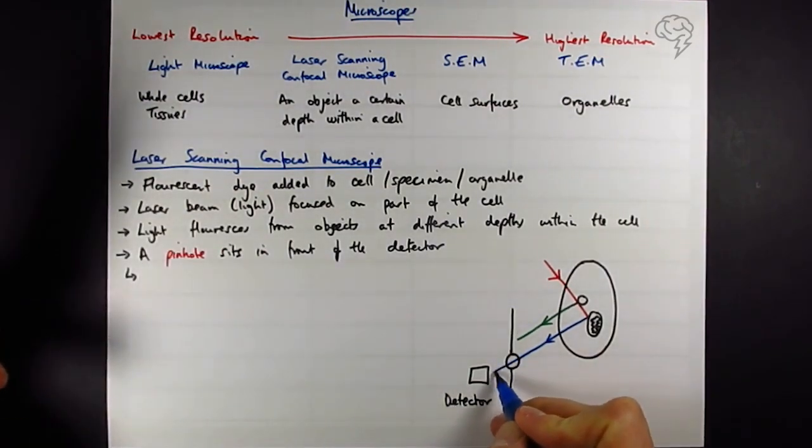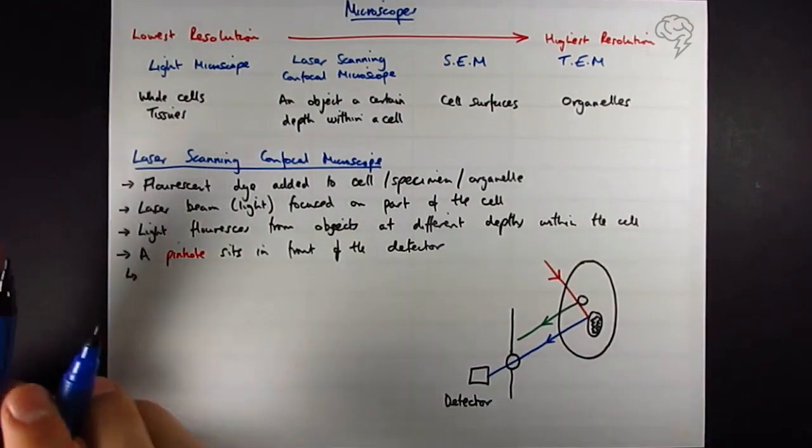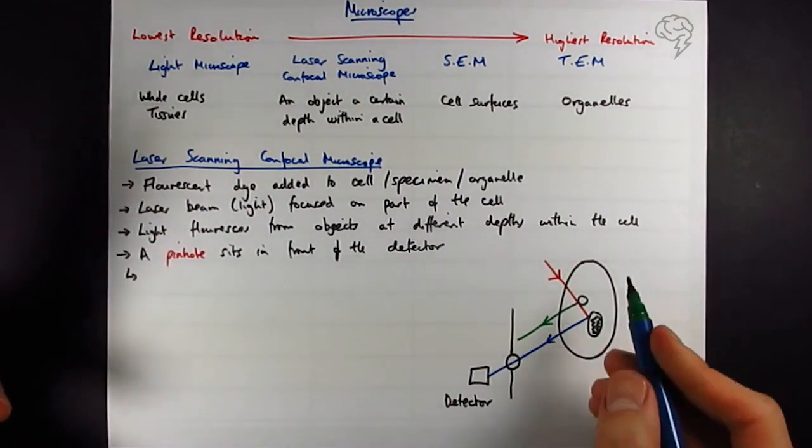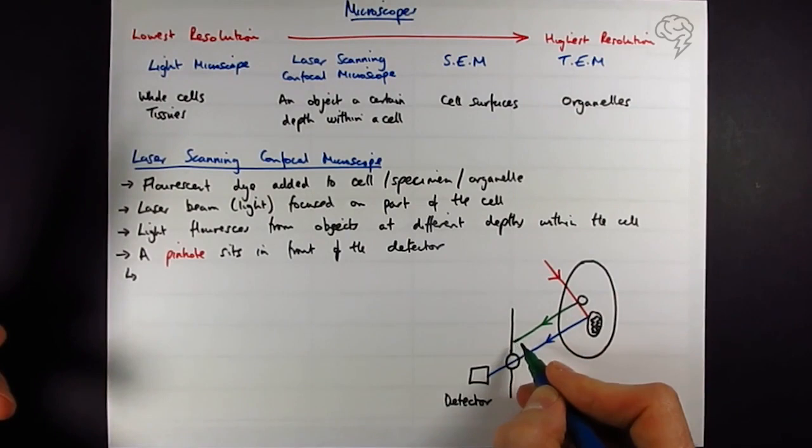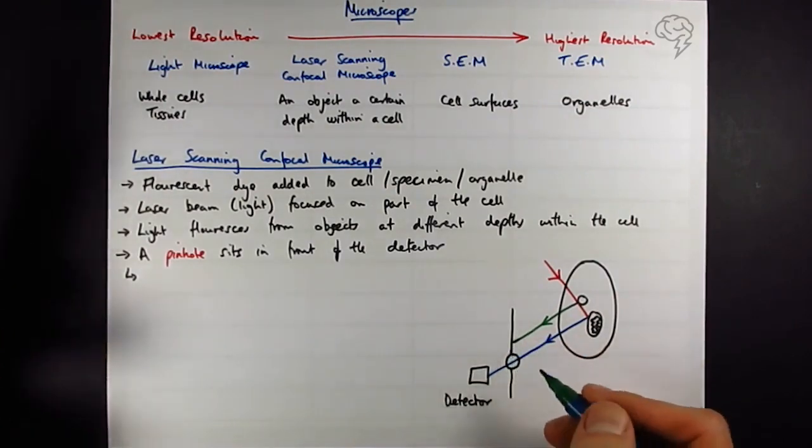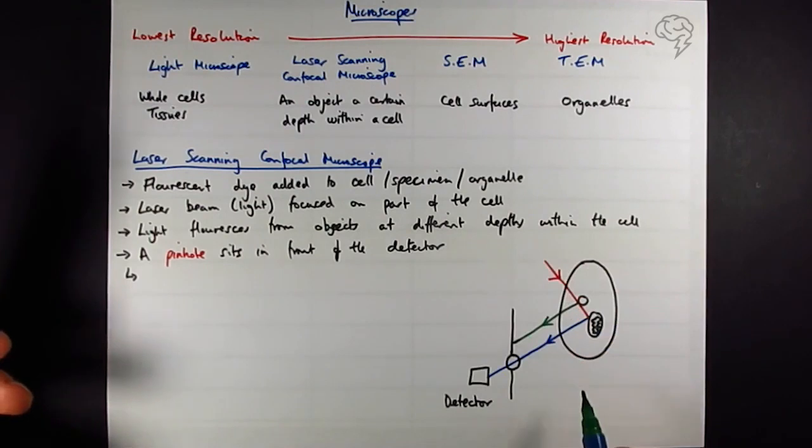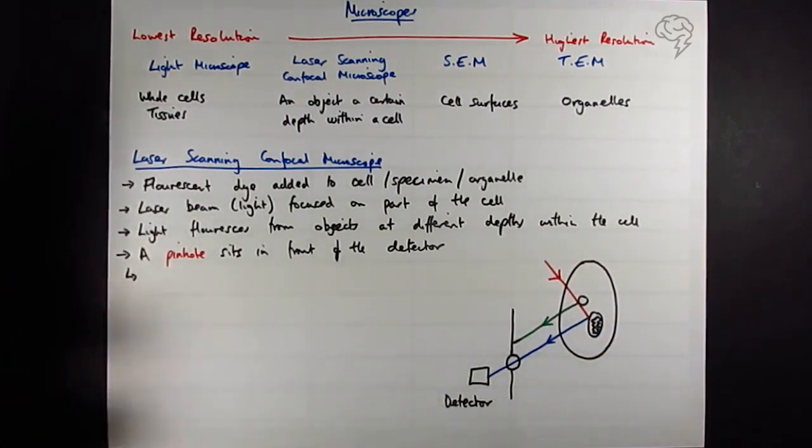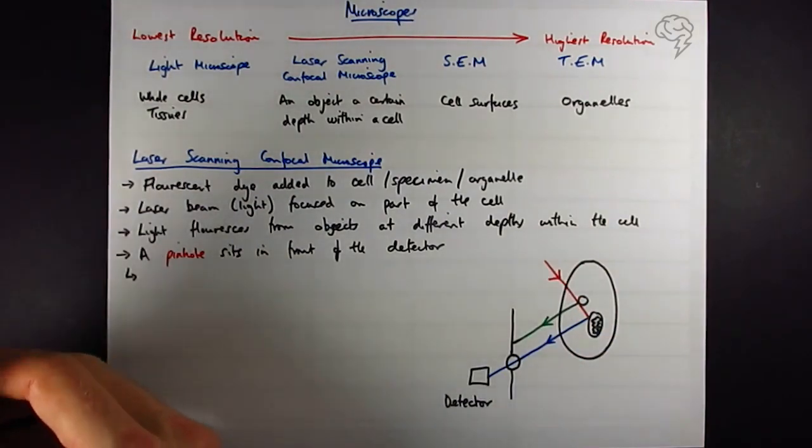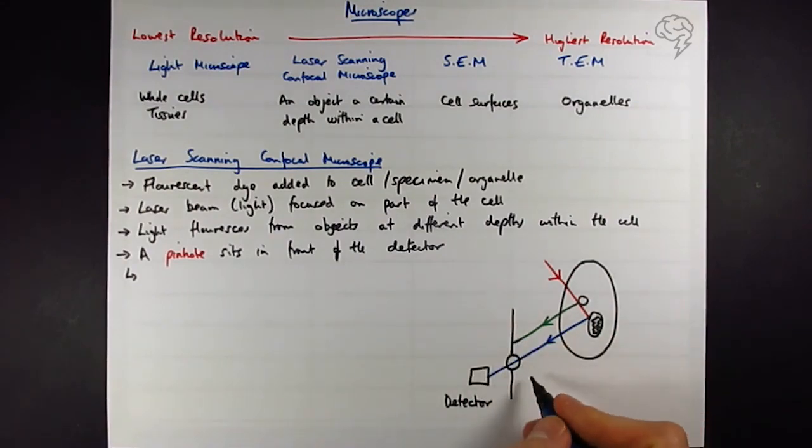And then we have a screen with a pinhole and then my detector is going to sit behind this screen. So this then is going to continue through and hit the detector. But obviously the light that's come from other objects at different depths within the cell are going to hit the screen and they're not going to reach the detector. The position of the detector behind the pinhole is going to determine which bits of light at which depth within the cell are seen. So the pinhole sits in, this is the pinhole.